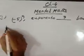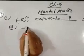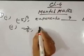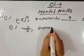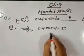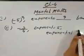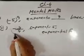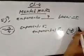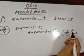Point number 2: the base is minus 3 by 4 and the exponent is 5. Write it in exponential form. Very easy — first we write the base, which is minus 3 by 4, then the exponent, which is the power. So the answer is minus 3 by 4 to the power 5.